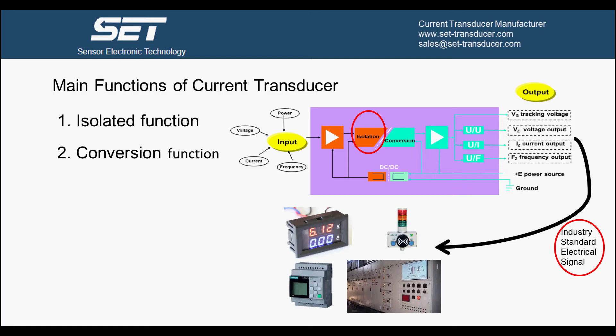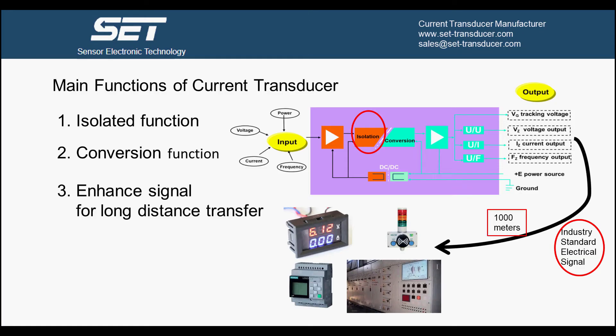Third: enhance signal for long distance transfer. Current transducer can enhance weak current to an easy-to-receive standard signal, so the output signal can be transferred for a long distance, such as 4 to 20 mA signal can be transferred up to 1000 m.